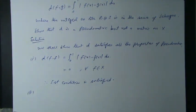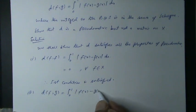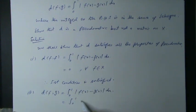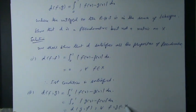Second condition: distance of f comma g is equal to the integral from 0 to 1 of the magnitude of f of x minus g of x dx, which can be written as the magnitude of g of x minus f of x dx. This is equal to distance of g comma f for all f, g belonging to non-empty set X. Therefore the second condition is also satisfied.